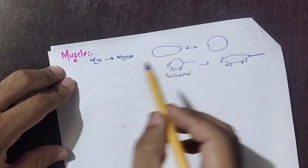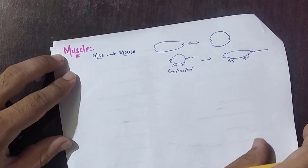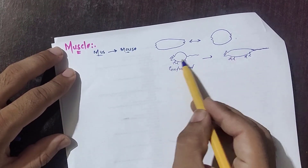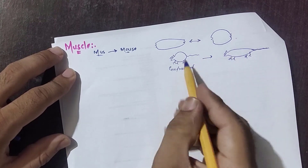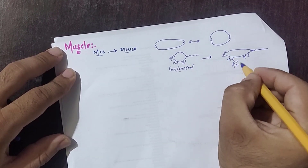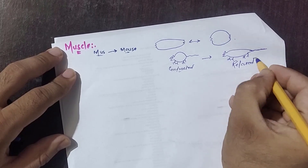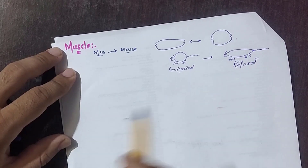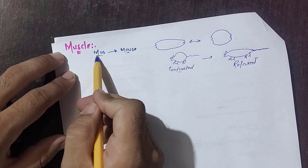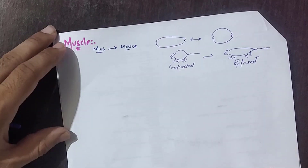So it acts like a mouse — when a mouse contracts itself, you can see its body, tail, and limbs. This is a contracted mouse and this is a relaxed mouse, or a relaxed muscle. Our muscles show this same phenomenon of contraction and relaxation — that is why this word is derived from the Latin word 'mus.'